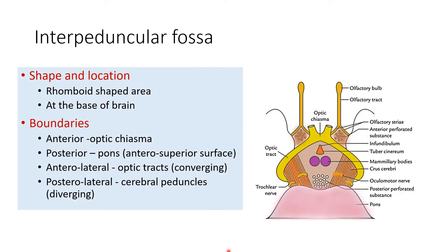The interpeduncular fossa is rhomboid in shape and it is located at the base of the brain. Its boundaries: anteriorly the optic chiasma.